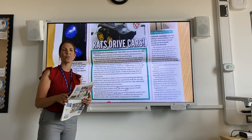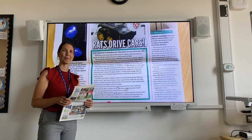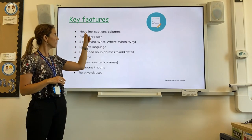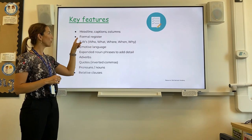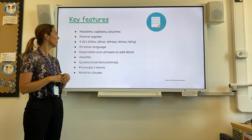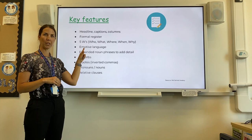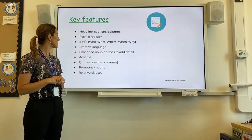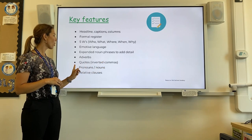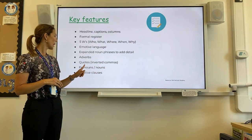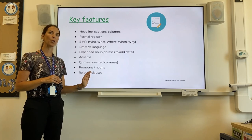Remember to magpie — that's going to help you in writing your own newspaper later. It's very important that we have our headline, our caption with our picture, and we must have columns. In the same report, we need a formal register, our five W's that give us more information, some emotive language, an expanded noun phrase to add detail, some adverbs, definitely a quote with inverted commas, pronouns or nouns, and then there would also be a relative clause.